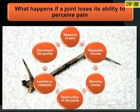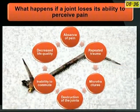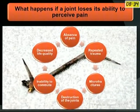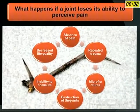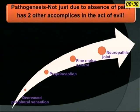What happens if a joint loses its ability to perceive pain? Repeated trauma, micro fractures, destruction of joint, inability to commute, and decreased quality of life.